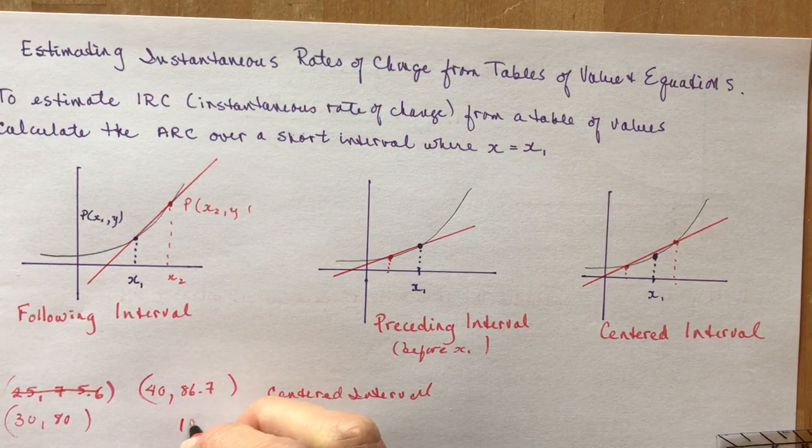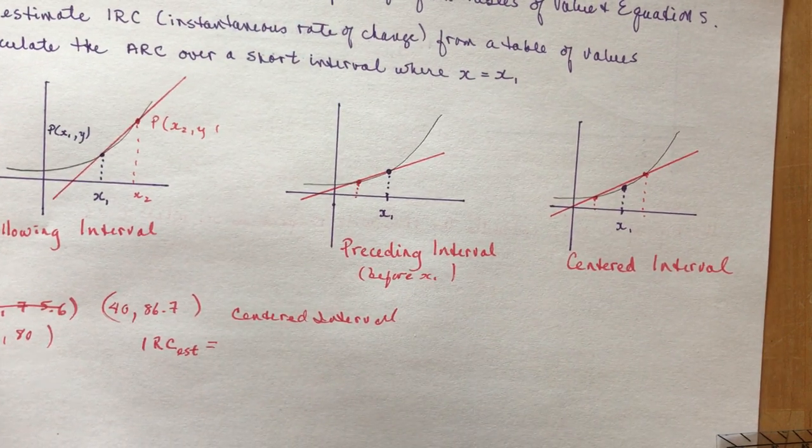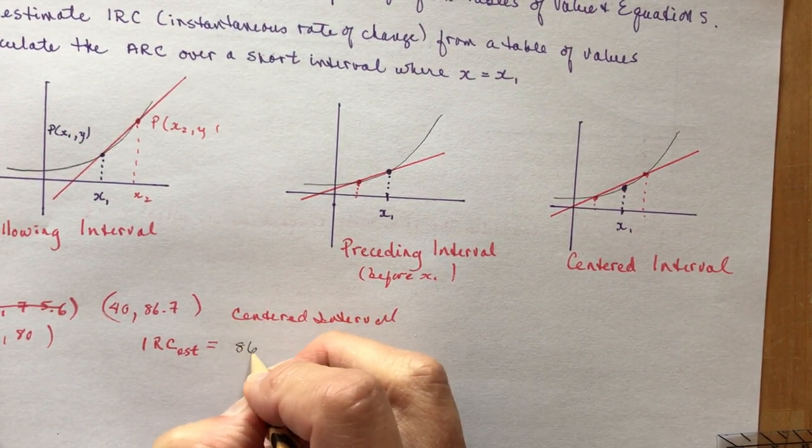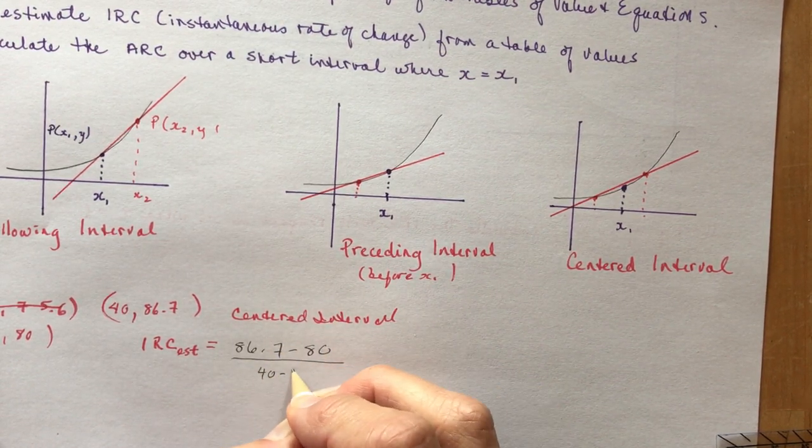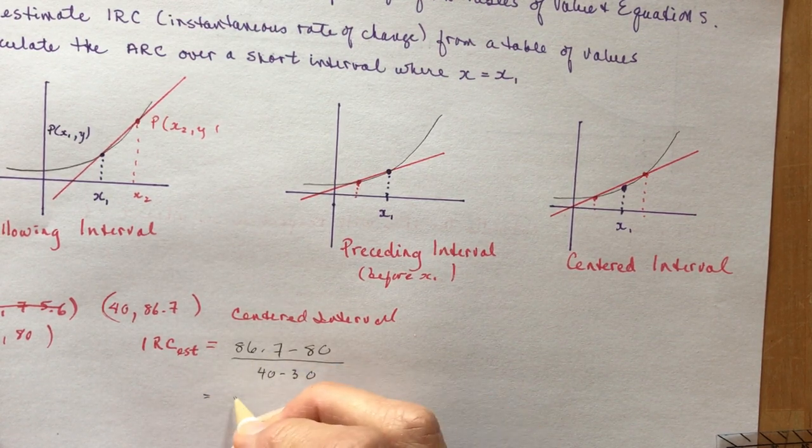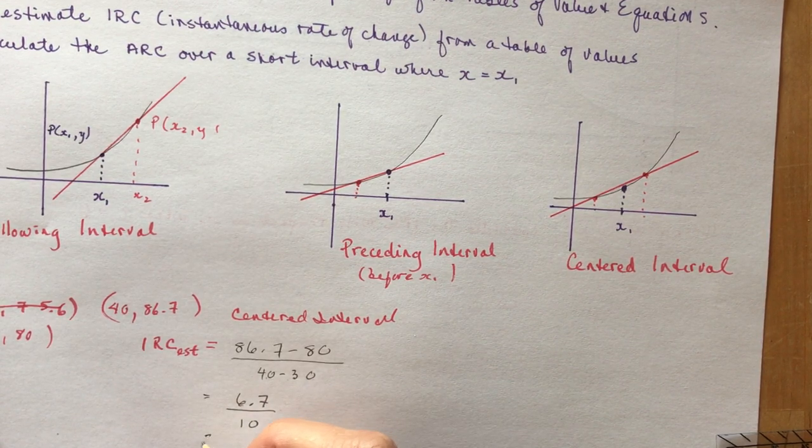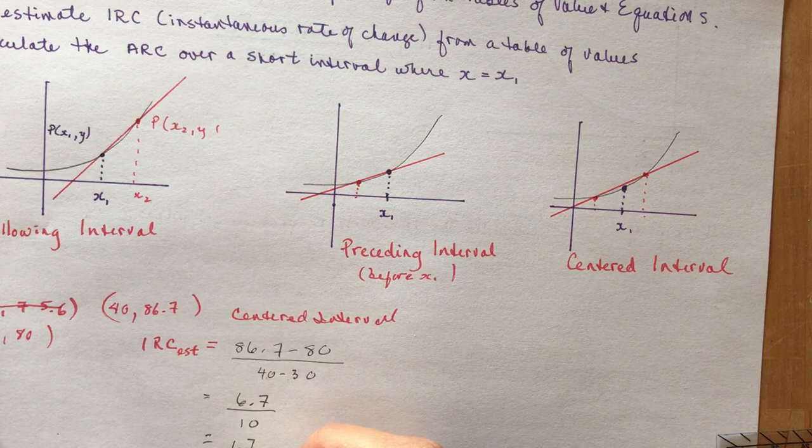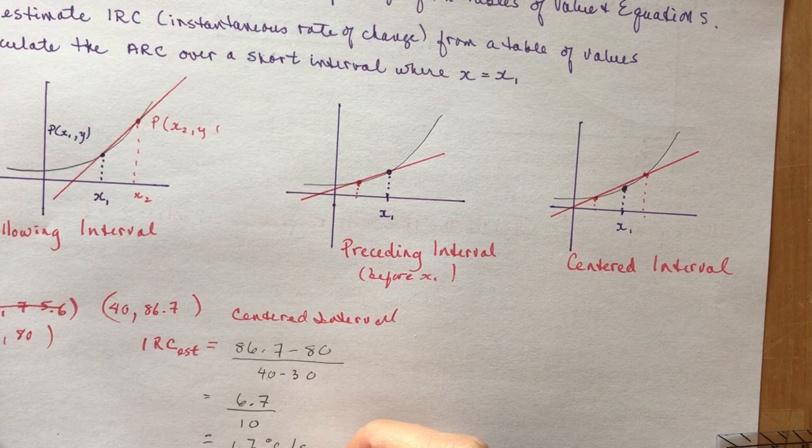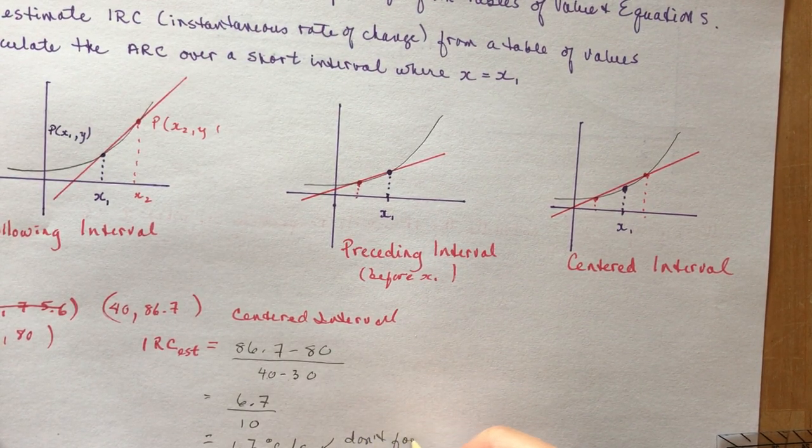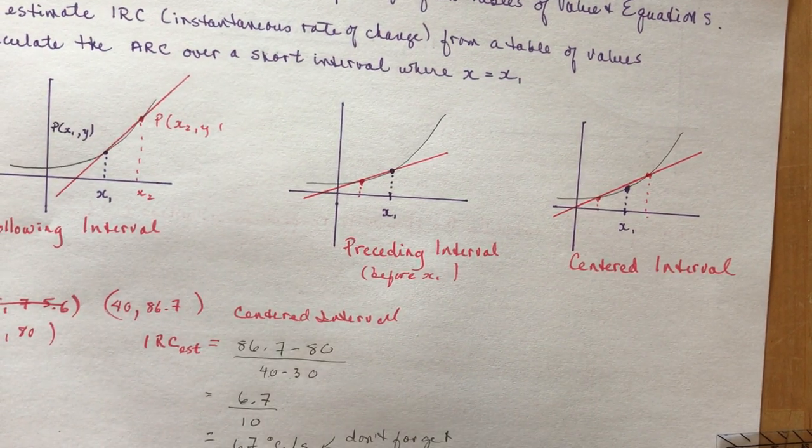All I do is subtract them. The instantaneous rate of change, I'm just going to write estimated because it's not exact, it's an estimation. So I'm going to do 86.7 minus 80 divided by 40 minus 30. That's going to be easy to calculate, I can do that in my head. That's 6.7 on the top and 40 minus 30 is 10, so that's equal to 0.67. What are we talking about here? Degrees centigrade per second. Don't forget your units. It's very important that you have units or you'll lose a mark.